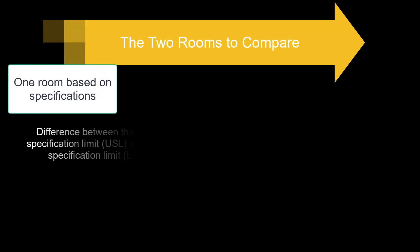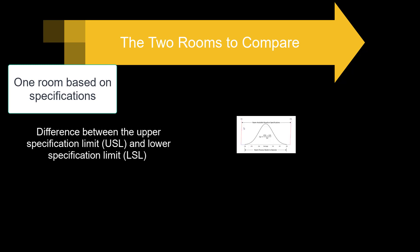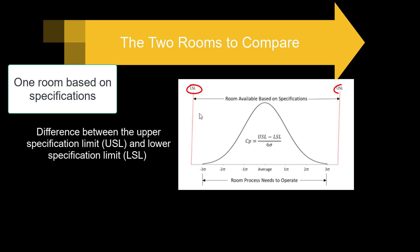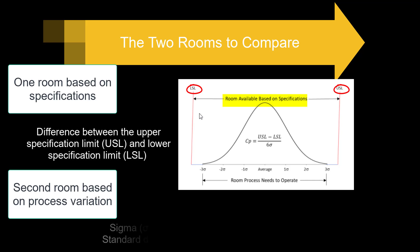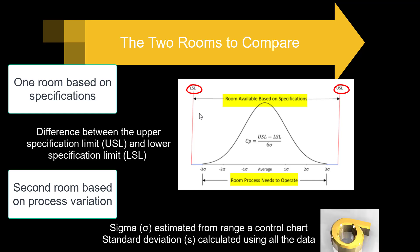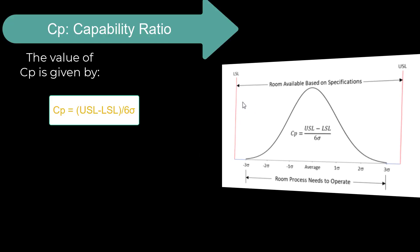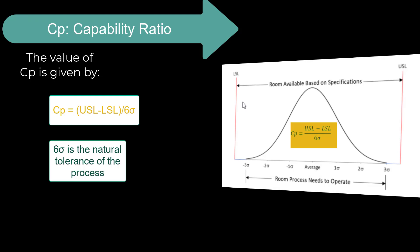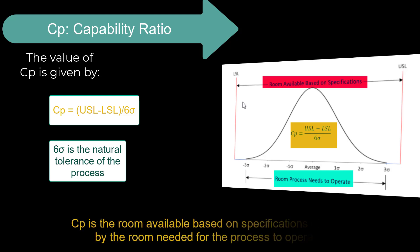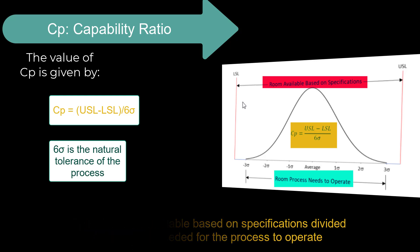One room is going to be based on specifications. If you have an upper spec and a lower spec, the difference between those is the room based on specification, as shown in this diagram. Then you also have the room based on process variation, which is the plus or minus three standard deviations. There are two different types of standard deviations we're going to use: sigma, which is estimated from the average range on a control chart, and standard deviation S, which is calculated using all the data. The capability ratio CP equals the upper spec minus the lower spec divided by six sigma, called the natural tolerance of the process. CP is the ratio of the room based on specification over the room the process needs to operate.